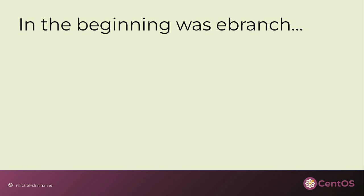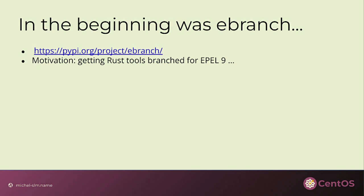Two years ago, I introduced a tool called eBranch at what became CentOS Connect — it used to be called CentOS Dojo. The latest version is up on PyPI and there's a link to the GitHub repo. The motivation at the time was that we run CentOS on our dev servers, and we have a lot of engineers who say 'I'm more productive if I have this Rust tool available — can we have it installed?' In CentOS Stream 8, the RPM tooling is too old, so you cannot package Rust packages the same way you do in Fedora.